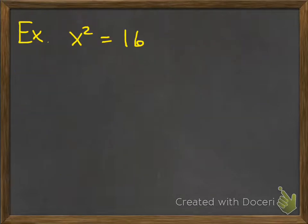Let's look at more examples. x squared equals 16. Take the square root of 16, which is 4, so x equals plus or minus 4. That's it.